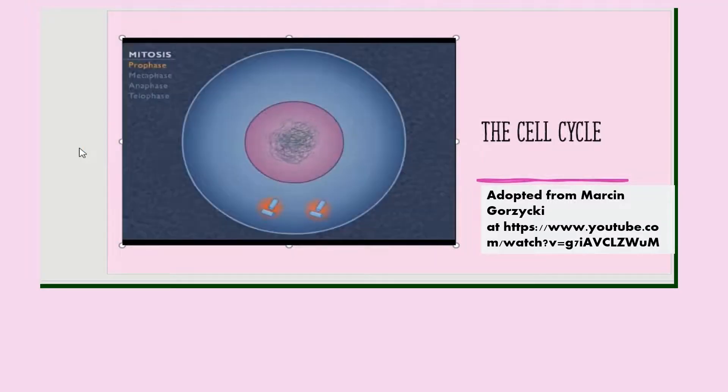During prophase, the chromosomes become visible and condense, becoming shorter and thicker. Each identical copy of a single chromosome is called a sister chromatid. The nuclear envelope breaks down and spindle fibers form as microtubules grow out of the centrioles that move to opposite poles of the cell.